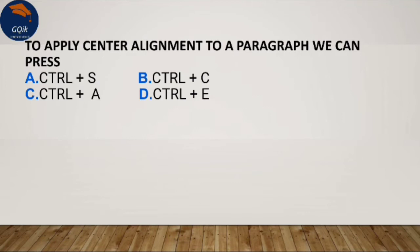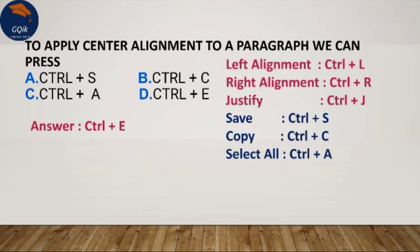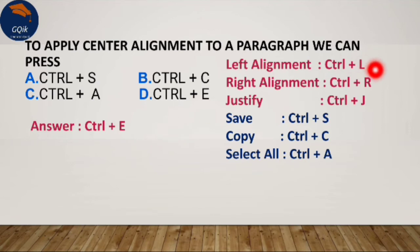To apply center alignment to a paragraph, we use a keyboard shortcut. For left alignment, use Ctrl+L; for right alignment, use Ctrl+R; for justify alignment, where both borders are aligned, use Ctrl+J. The default alignment is left alignment. The four alignments are left, right, center, and justify.